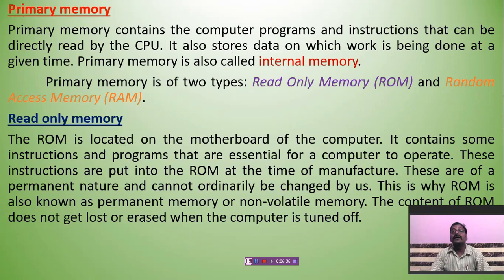Primary memory contains the computer programs and instructions that can be directly read by the CPU. It also stores data on which work is being done at a given time. The work we are currently doing is stored temporarily in the primary memory. Primary memory is also called internal memory, and it is of two types.